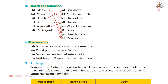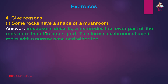Give reasons. Question 1: Some rocks have the shape of a mushroom. Answer: Because in deserts, wind erodes the lower part of the rock more than the upper part. This forms mushroom-shaped rocks with a narrow base and wider top.